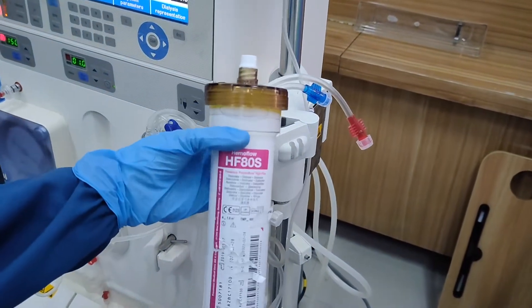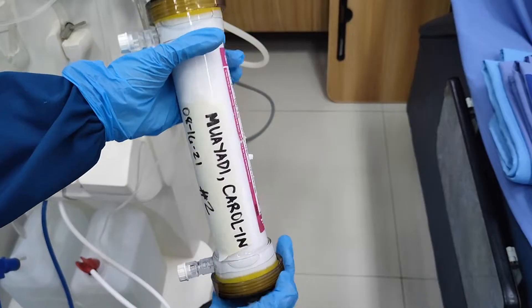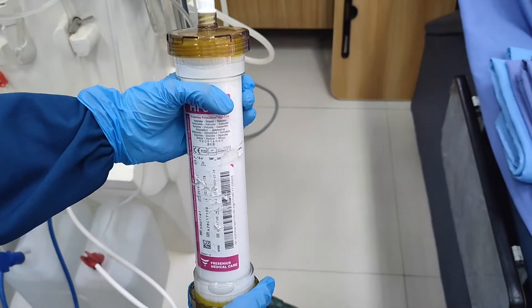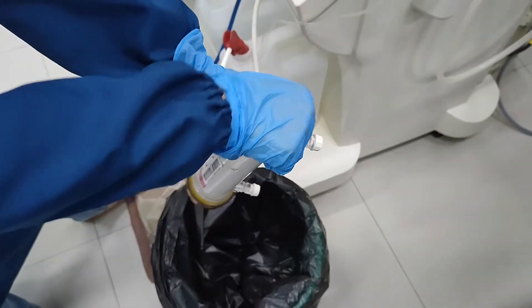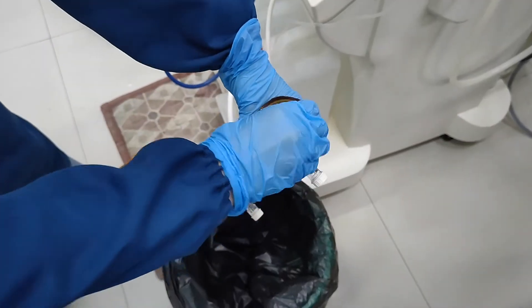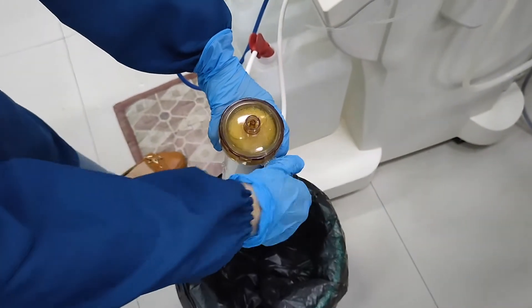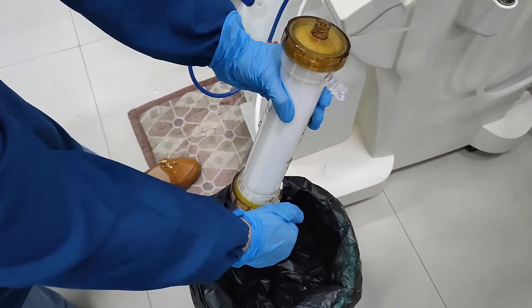The patient is using the dialyzer. Check for the full name of the patient, the date it was last processed, and the number of reuses. Remove all caps or covers and make sure you have prepared a bucket right next to the machine.